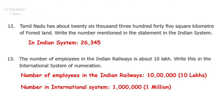Question 12: Tamil Nadu has about 26,345 square kilometers of forest land. Write the number mentioned in the statement in the Indian system. In the Indian system, the given number name will be written as 26,345. Question 13: The number of employees in Indian Railways is about 10 lakh. Write this in the international system of numeration. The number of employees is 10 lakhs, represented by writing 1 followed by 6 zeros. This number will be represented in the international system as 1 million.